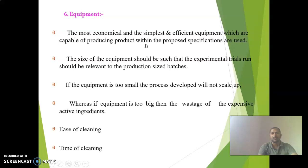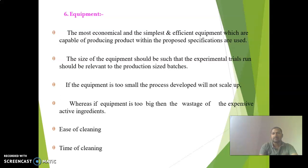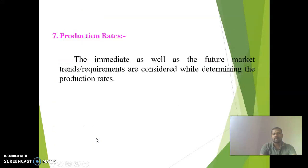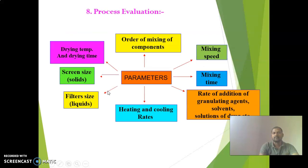The most economical, simplest, and efficient equipment capable of producing product within proposed specifications should be used. Equipment size should be relevant to production-size batches — if too small it will not be scalable, while if too big it wastes expensive active ingredients. An optimum size should be selected, considering ease and time of cleaning. Production rates should account for immediate and future market trends.